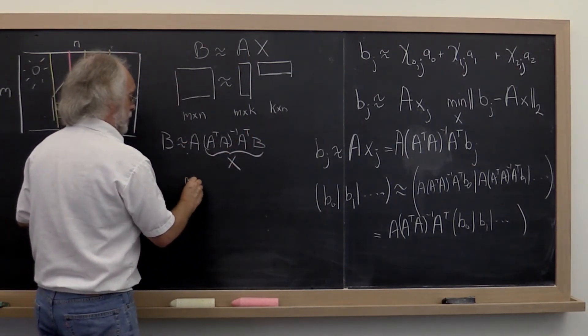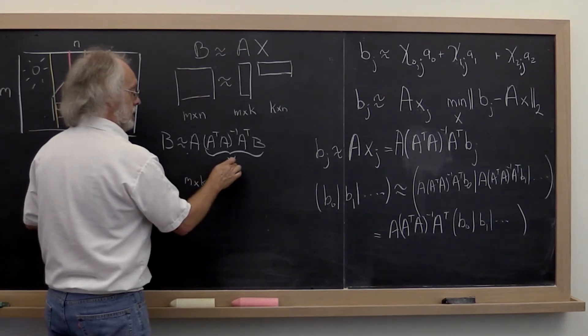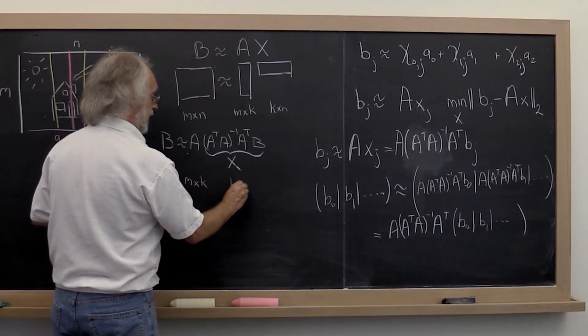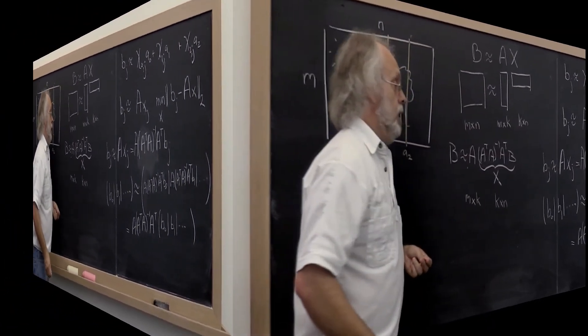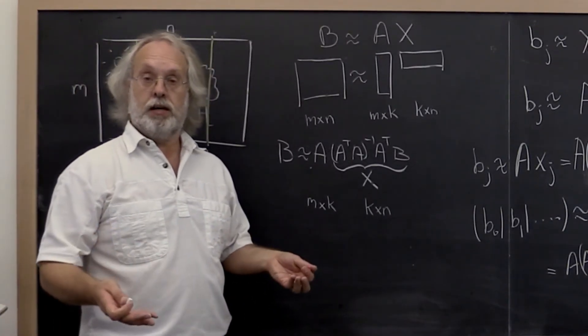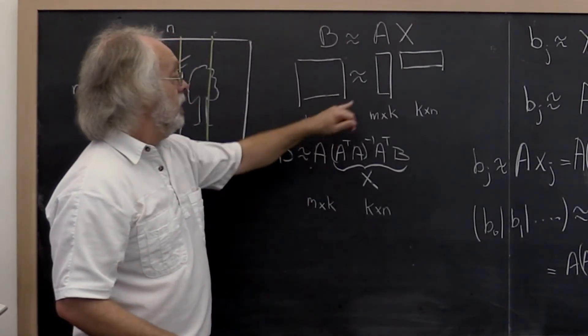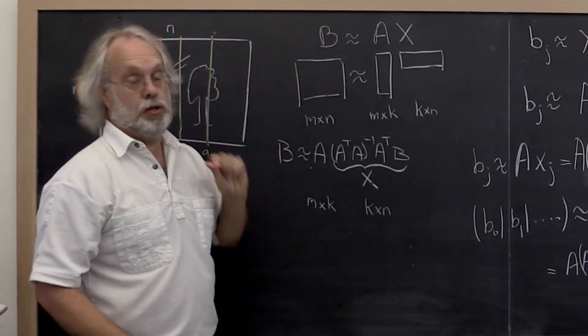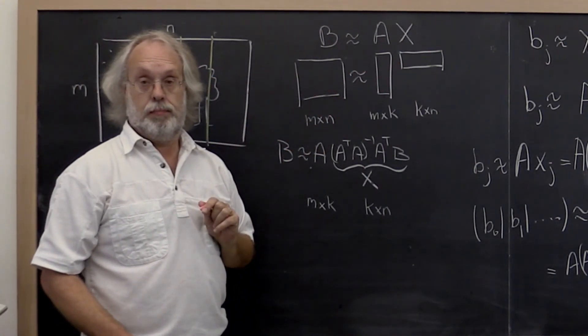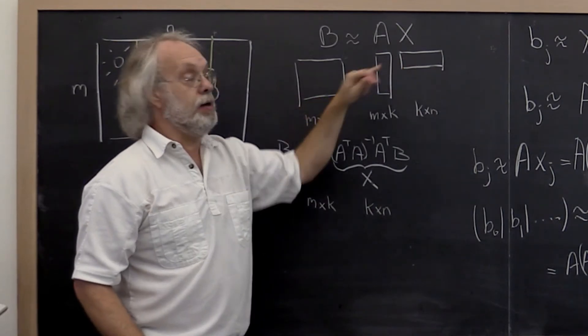This matrix is then m by k in general. This matrix, you can check, is k by n. And what we have now is a formula for computing a rank k approximation to our picture. You can check that this is a rank k matrix.